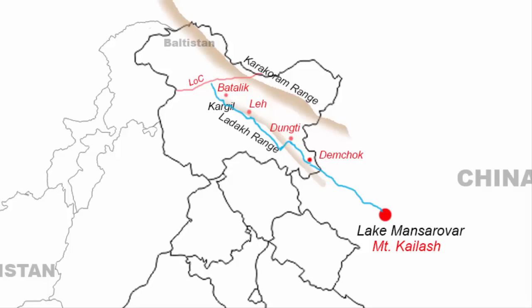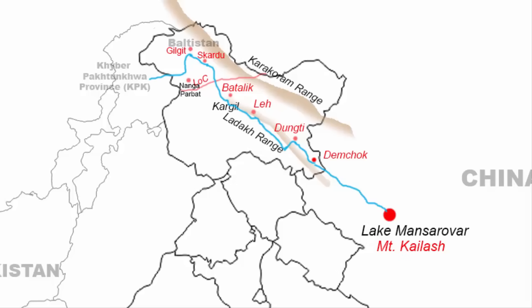The Indus River then enters the Baltistan region through the city of Skardu and continues to flow north-west towards the city of Gilgit. Upon reaching Gilgit, the river takes a south bend, then turns west, and fully enters the north-west frontier province of Pakistan, called Khyber Pakhtunkhwa, at around 8200 km. Here is Nanga Parbat, whose height is around 8126 meters above sea level.